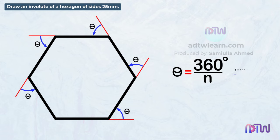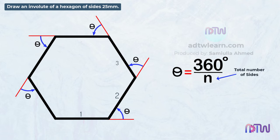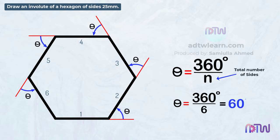Here, n is the total number of sides of this polygon. Since this is a hexagon, a total of 6 sides are present. Therefore, 360 degrees divided by 6 will be equal to 60 degrees. Therefore, each angle is 60 degrees.